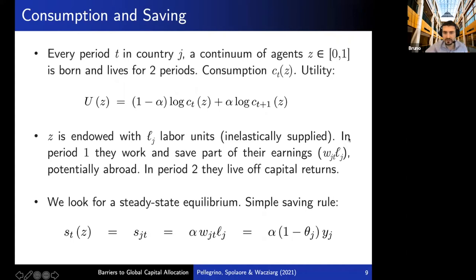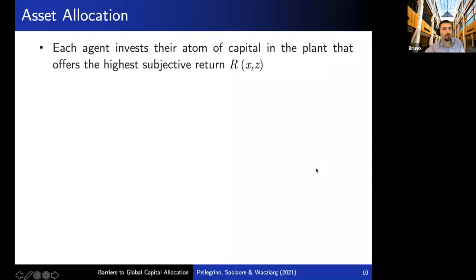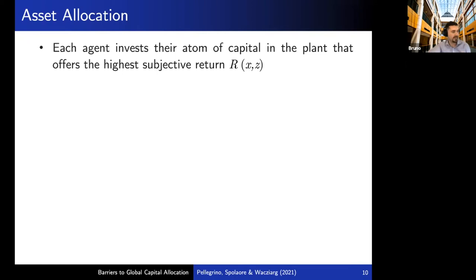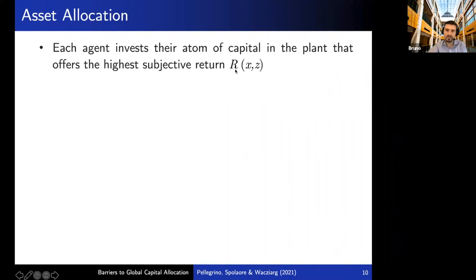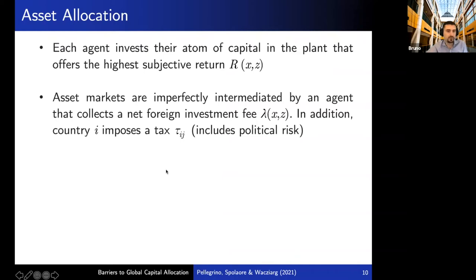Now, the interesting new part of our model: how do agents allocate capital across countries? Each agent is atomistic — they have their own little atom of capital that can be invested in one plant, located anywhere in the N countries. They choose the plant that offers the highest subjective return. We denote the subjective return specific to plant X and investor Z as uppercase R. These returns are subjective because asset markets are imperfectly intermediated — there's an intermediating agent that collects a net foreign investment fee, lambda, which varies at the plant-investor level X, Z.